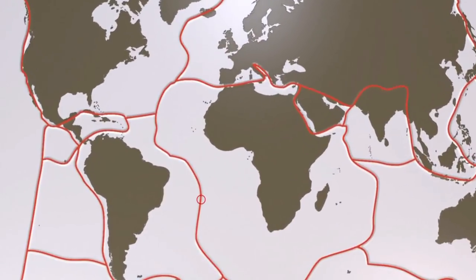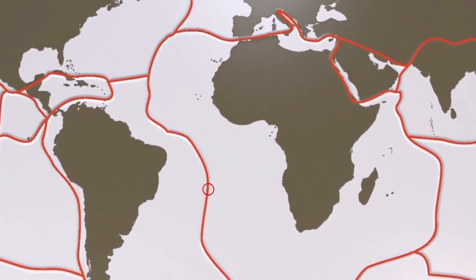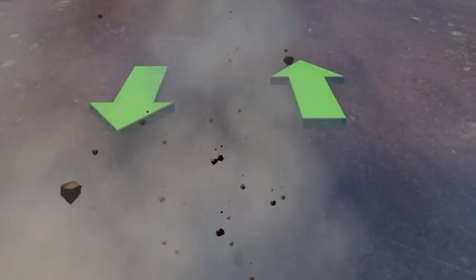Seismic activity is concentrated along fault lines, areas of fracture in the Earth's crust, generally found near ridges or tectonic plate boundaries. Constantly in motion, these huge plates sometimes collide, forcing one beneath the other.